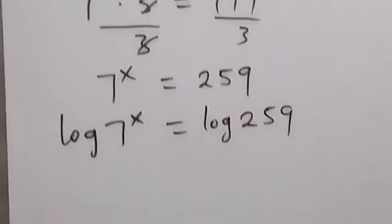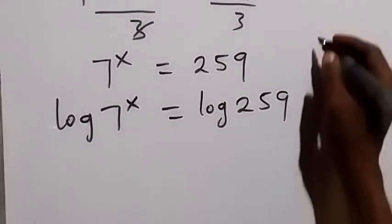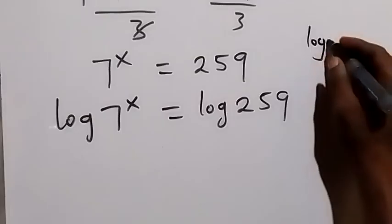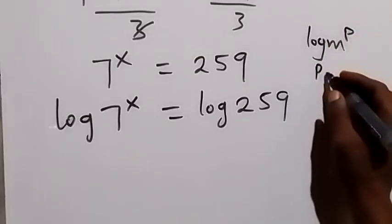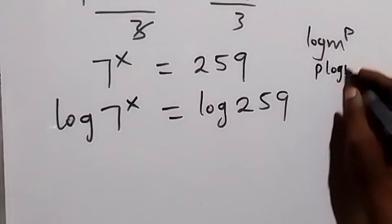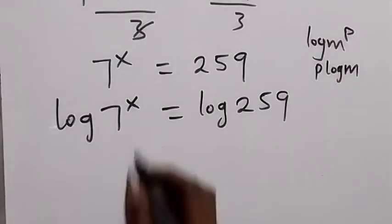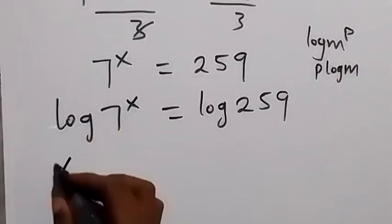Then applying the power law of logarithm. When we have log m raised to the power p, here p comes to the back and this becomes p log m. So when we use this power law here, this x can come to the back. We have x log 7 which is equal to log 259.